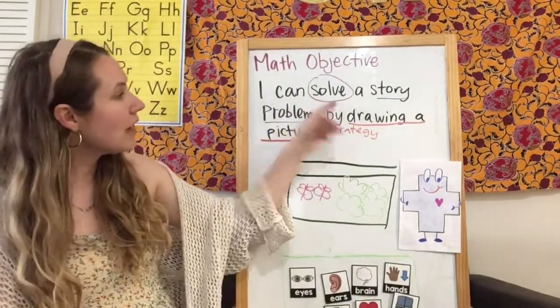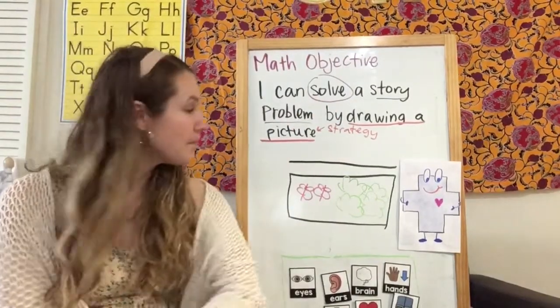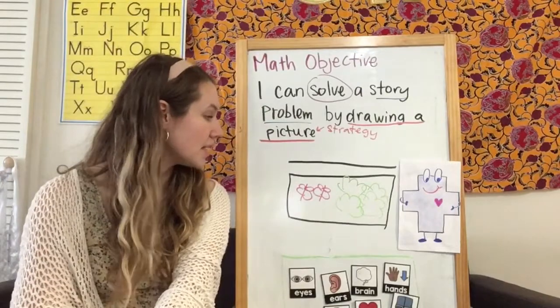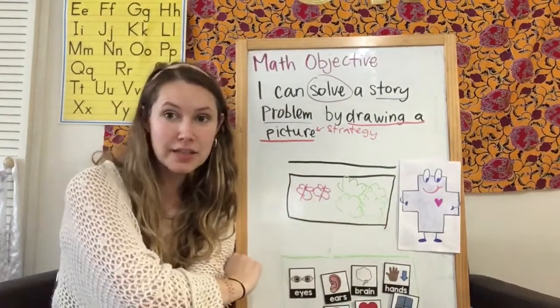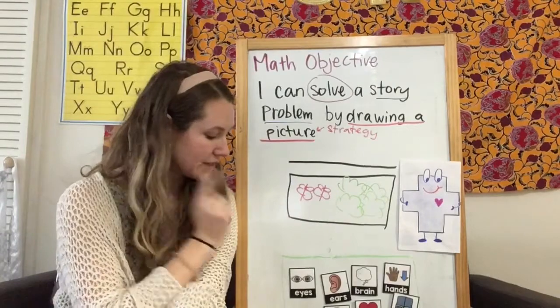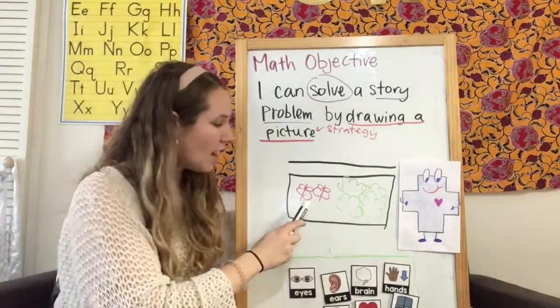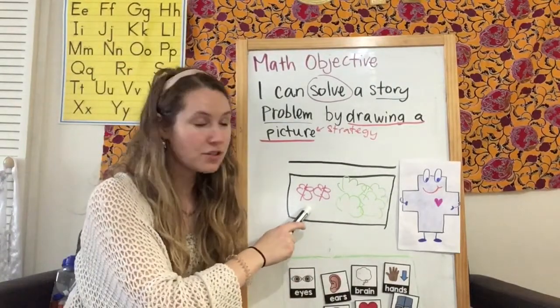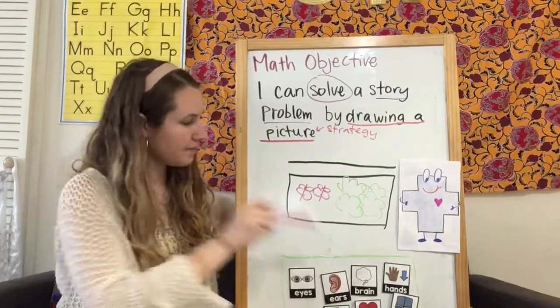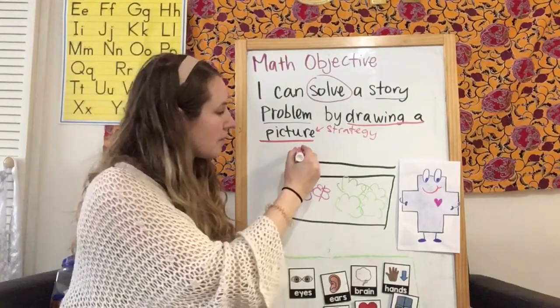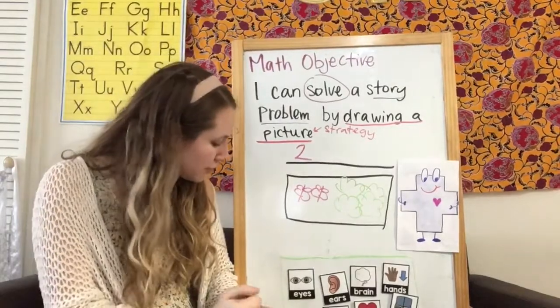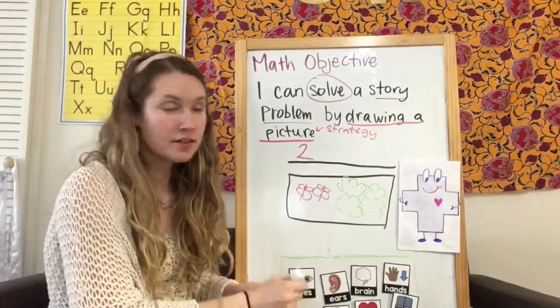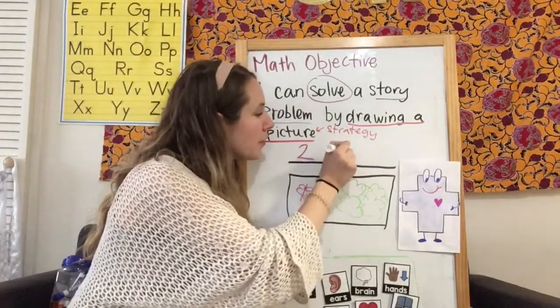And remember, we have to solve this story problem by writing a number sentence to it. I already have my picture here. So now I need to think about my number sentence. I drew two butterflies. So that's the first number I'm going to write. I also drew four bushes. So that's the second number I'm going to write.